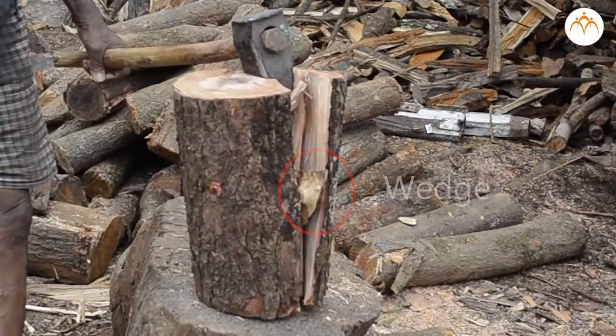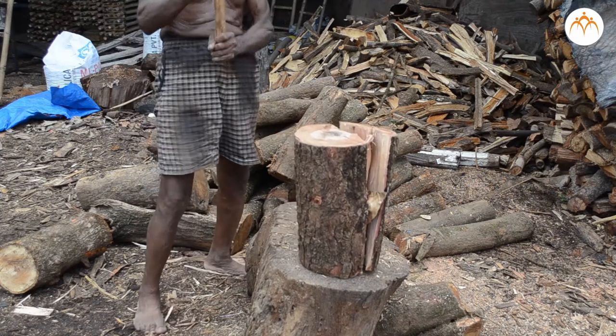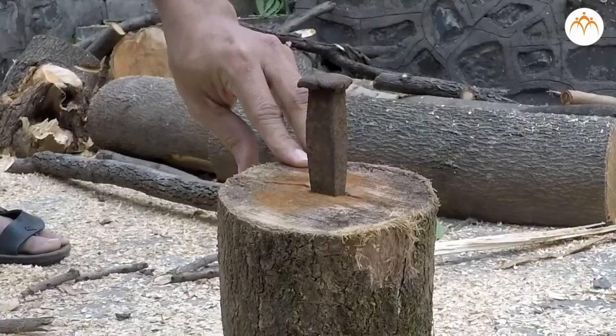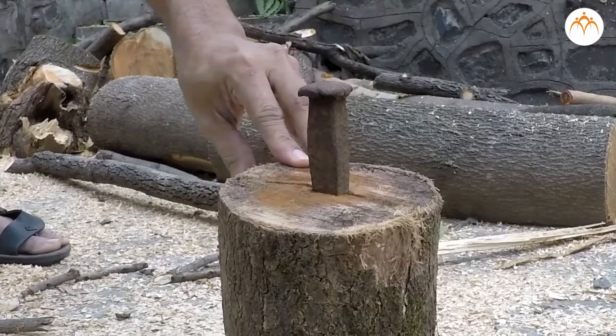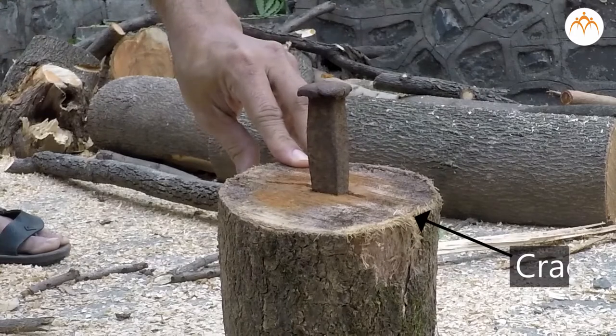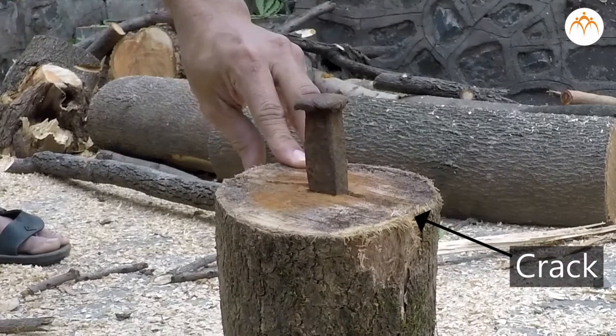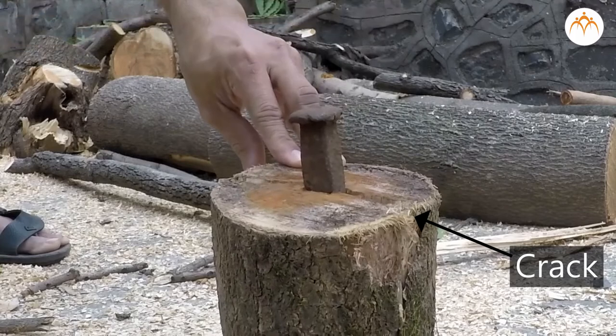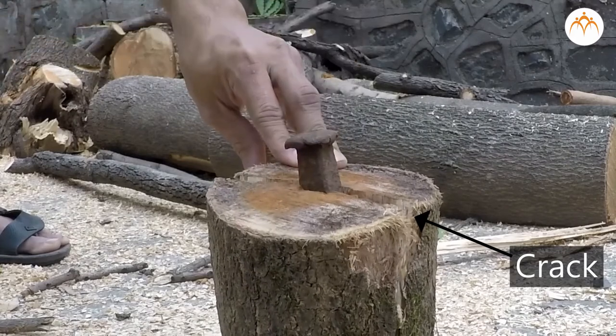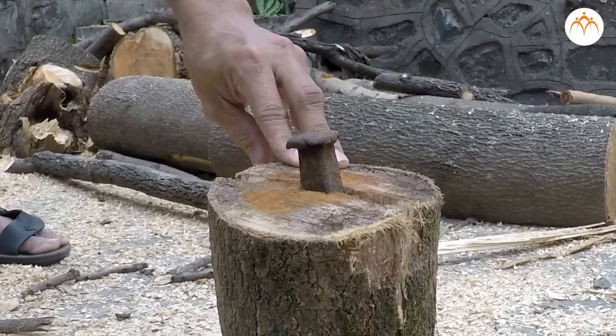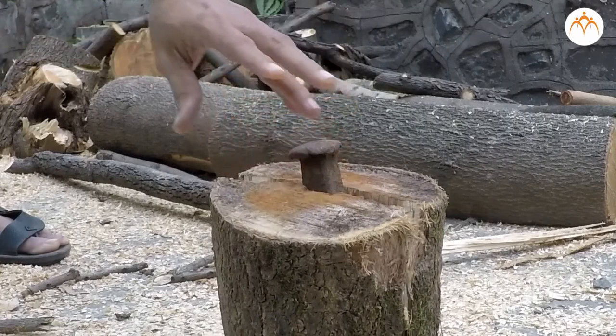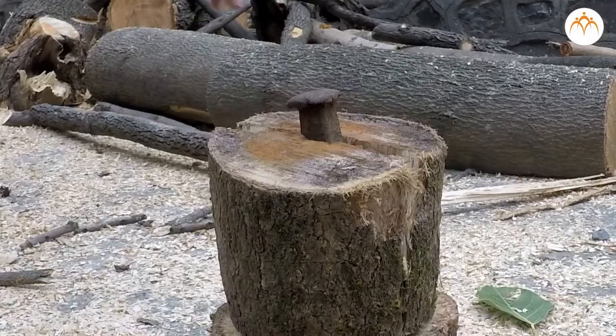All wedges use force to come between things, but they are not always called wedges. To split a log, you put a wedge in a narrow crack of the log. Then hit the wedge hard with a long hammer. After several blows, the log will split into two. The wedge multiplied the force of each blow. It made a hard job easier to do.